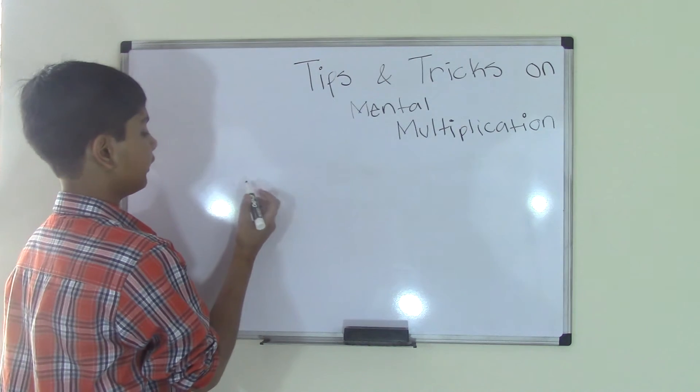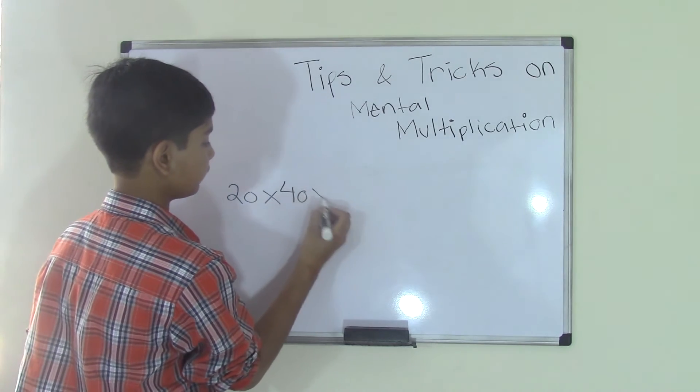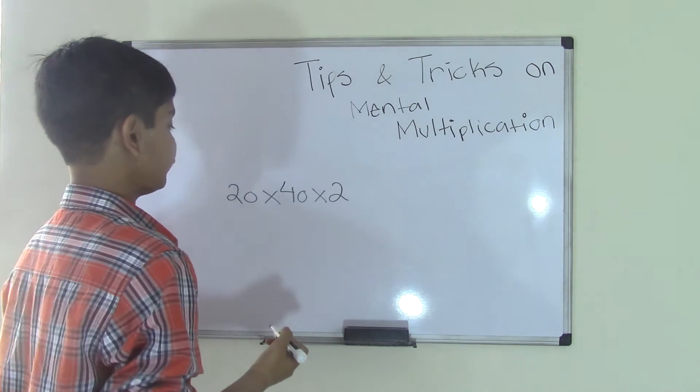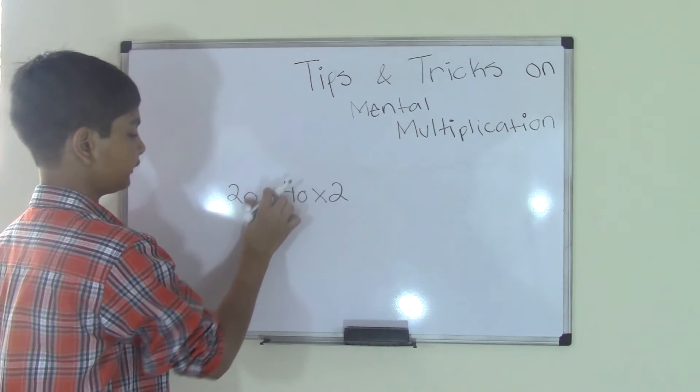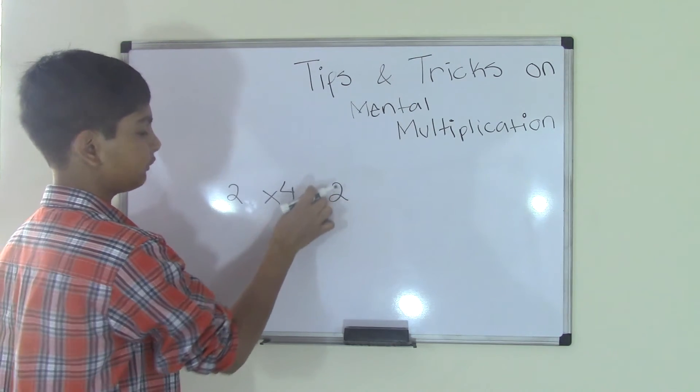For example, if you get a problem like 20 times 40 times 2, it looks hard but it's actually easier. To do this first, let's cut out the zeros. Yes, you can cut out the zeros when you do multiplication because you can always put them back in.